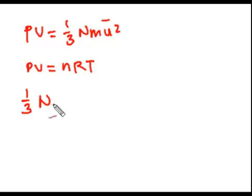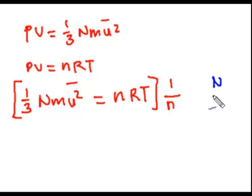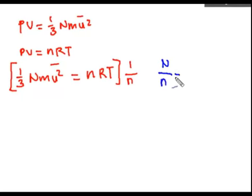We have one-third NMU squared bar equal to NRT. If we multiply this with one over N, the number of moles, what we get is that this total number of moles divided by N is equivalent to Avogadro's number, the number of particles per mole of the substance.